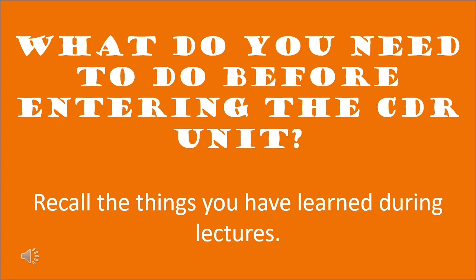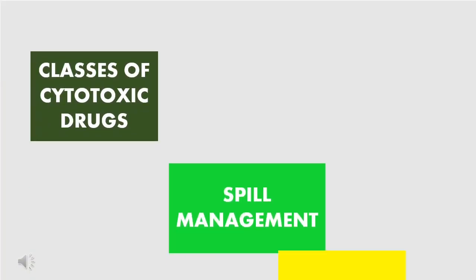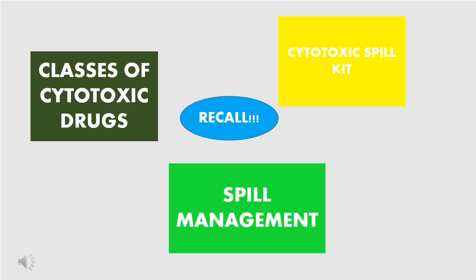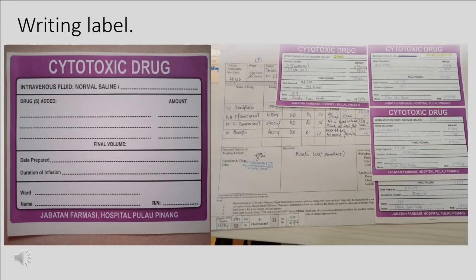Tips: What do you need to do before entering the CDR unit? The first thing is to recall what you have learned during lectures. Revise the classes of cytotoxic drugs, spill management, and cytotoxic spill kit — revise the whole topic before you enter the unit. Based on personal experience after one month in this unit, the first thing learned was how to write a label. It was a fast-paced learning process because the pharmacists were busy, so the advice is: when you go for internship, no matter what unit you're in, please pay attention and listen carefully when somebody teaches you something.